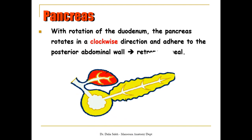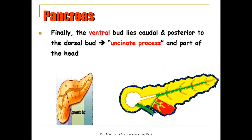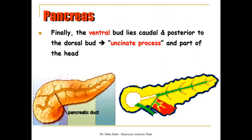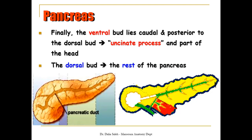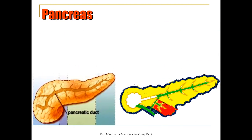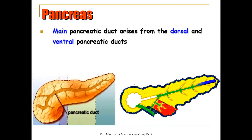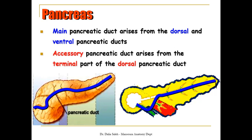Finally, the ventral bud lies caudal and posterior to the dorsal bud and forms the uncinate process and part of the head of the pancreas, while the dorsal bud gives us the rest of the pancreas. The main pancreatic duct arises from the dorsal and ventral pancreatic ducts, while the accessory pancreatic duct arises from the terminal part of the dorsal pancreatic duct.